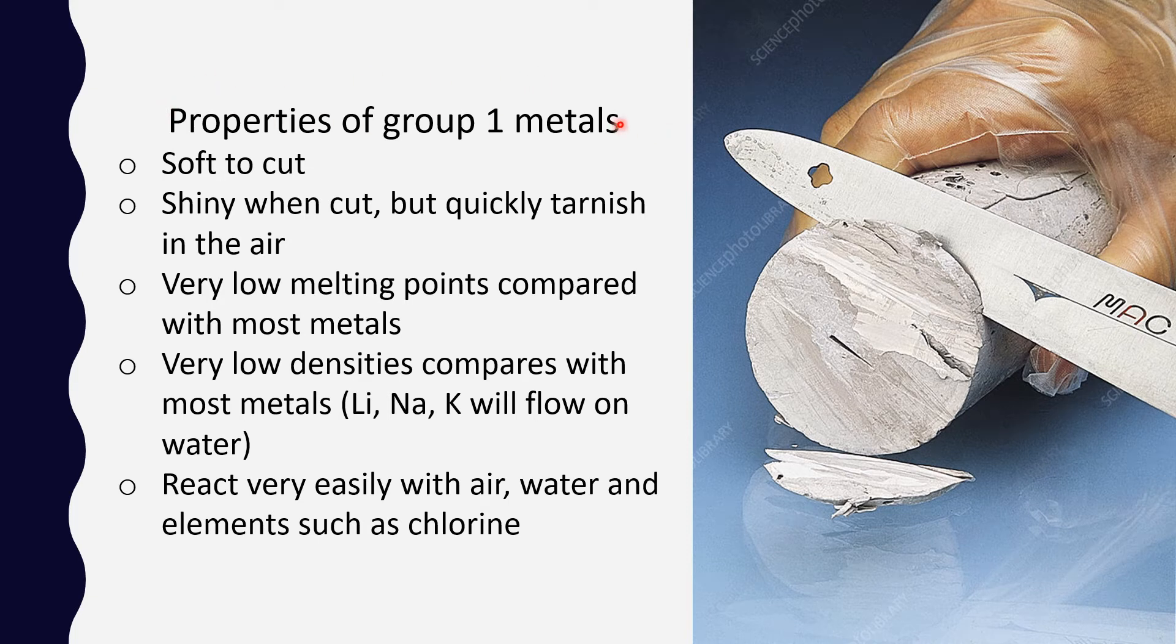Now, properties of Group 1 metals. All of them are soft to cut, as you can see here. They're shiny like most metals, but they quickly tarnish in air because they oxidize. They react really vigorously with air and water, and they react very easily with water and elements such as chlorine. And that exactly is why they are stored in oil—so they do not react with air. They have very low melting points compared with most metals, and their density compared with most metals is very low. As you can see, those elements can even float on water.